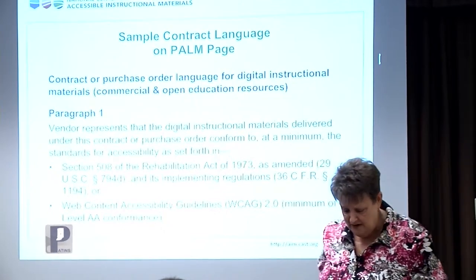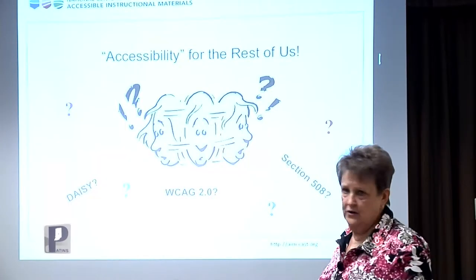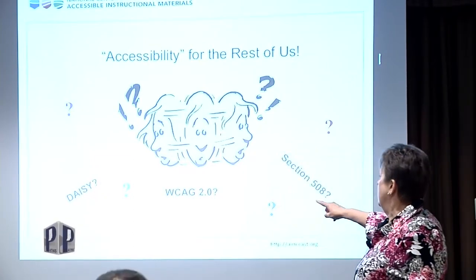There's some sample contract language. If you go to aim.cast.org, you'll see right on the homepage a block that says 'PALM Initiative' — you can find this sample contract language. It talks about print but also about digital, and what a company can do to show purchasers that their materials are actually accessible. But there's 'accessibility for the rest of us' — what is it that I want to ask? Since I can't quote you the tags in a NIMAS file or a DAISY file or WCAG 2.0 AA or Section 508, what can I actually do?